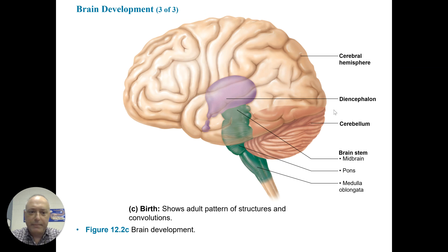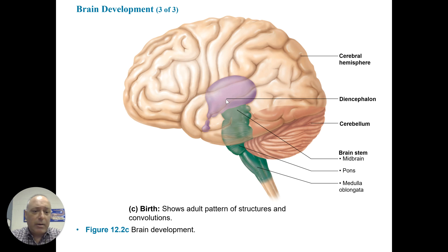At birth, we've got a semi-mature brain. It's got an adult pattern structure with different convolutions. We've got the cerebral hemisphere, the major portion of the telencephalon — telencephalon just means end brain. The diencephalon would be part of the midbrain. And here we show the cerebellum and then the brainstem, which is made up of the midbrain, the pons, and the medulla oblongata.